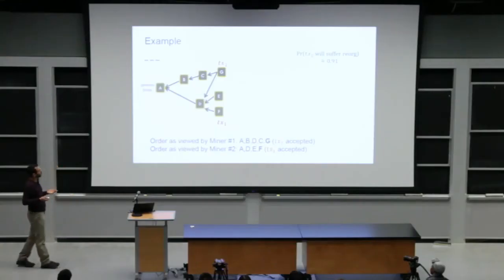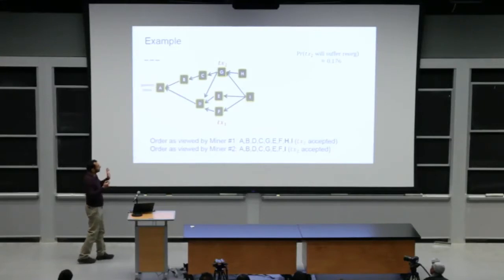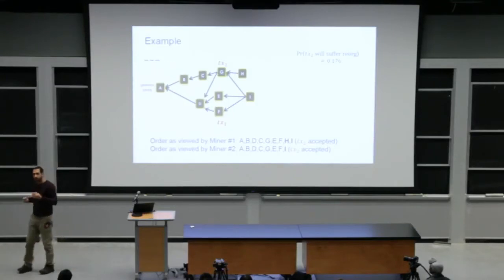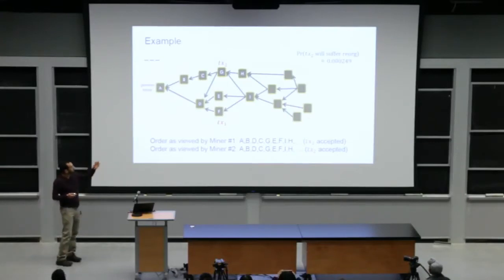When you see a transaction with one confirmation and it's a sensitive transaction, you'll refrain from accepting it until further confirmations. Then when time grows, more blocks are added to the ledger and all miners acknowledge all blocks that they see. So the minor of block I received full information on the EFG, block H only viewed block G. And then you see that the probability that transaction two will not be accepted decreases now it's 0.76.